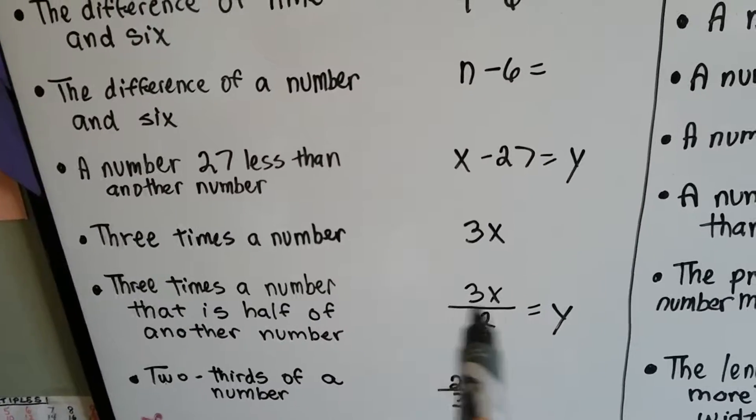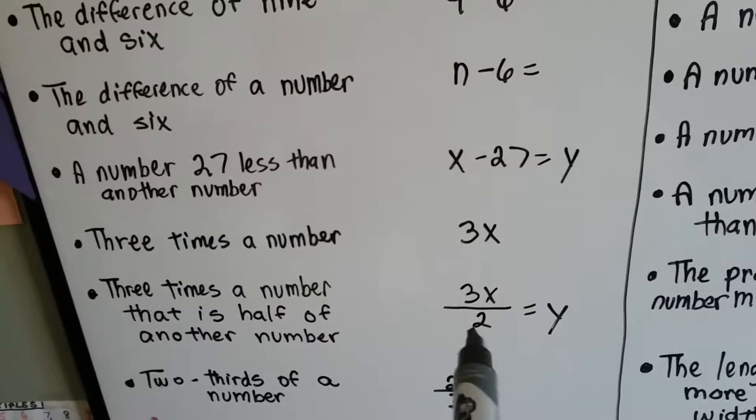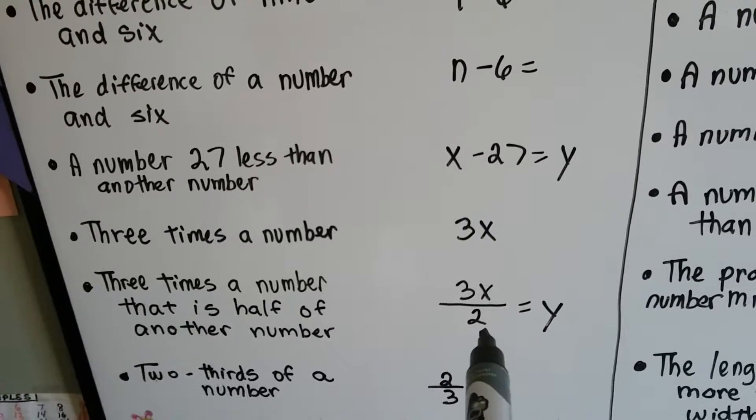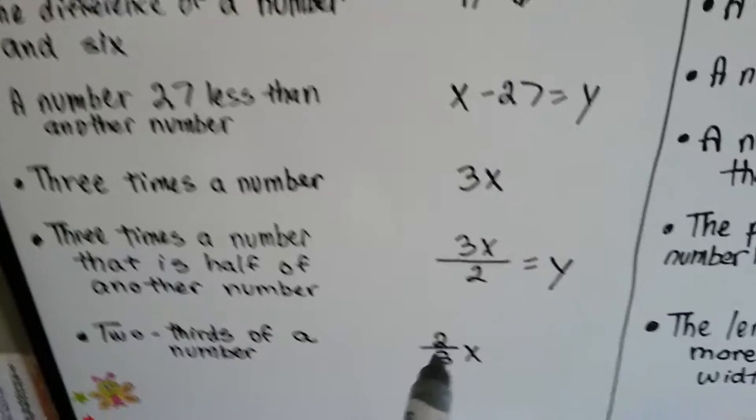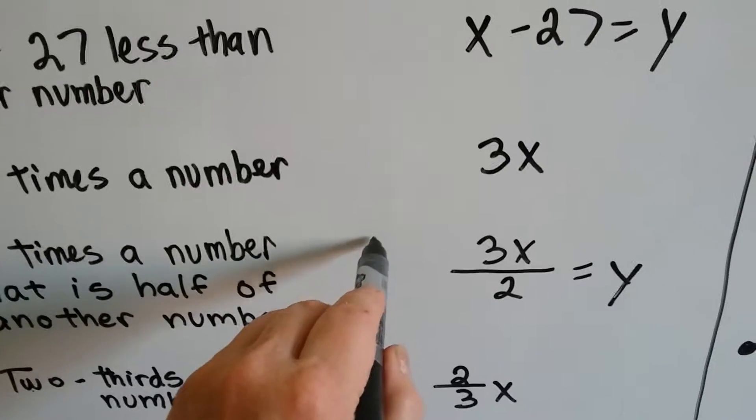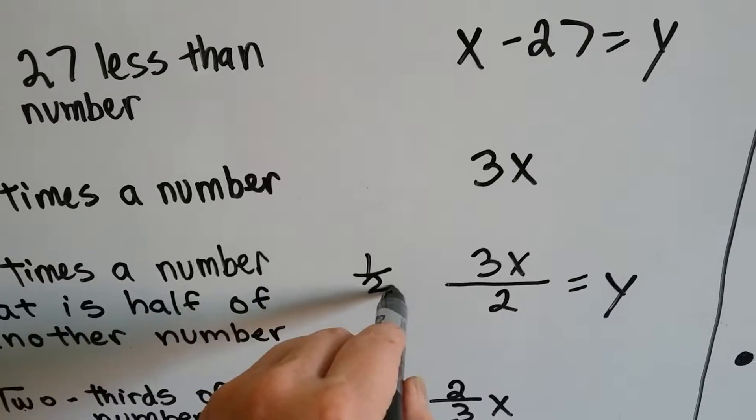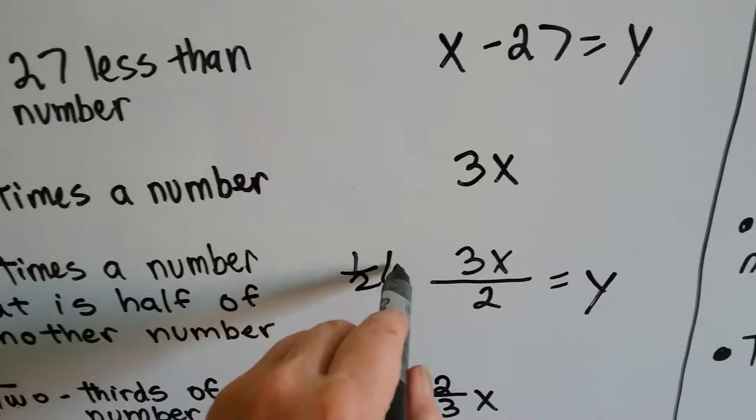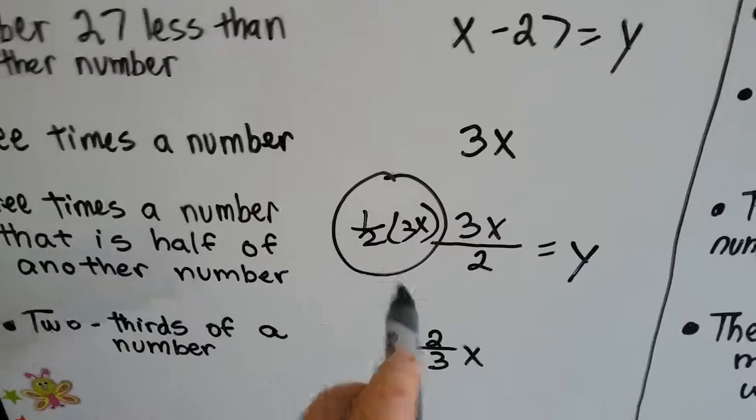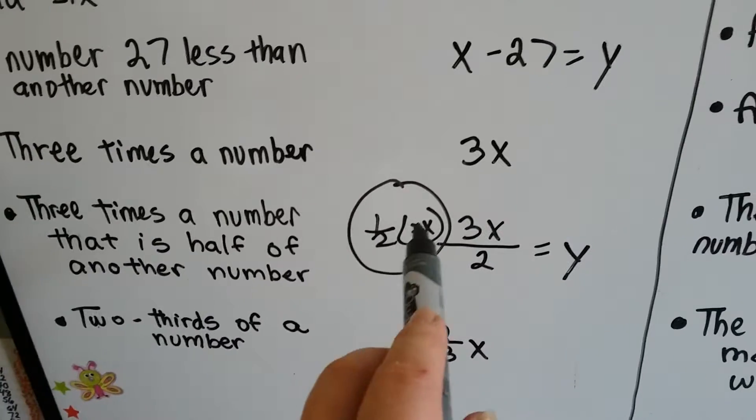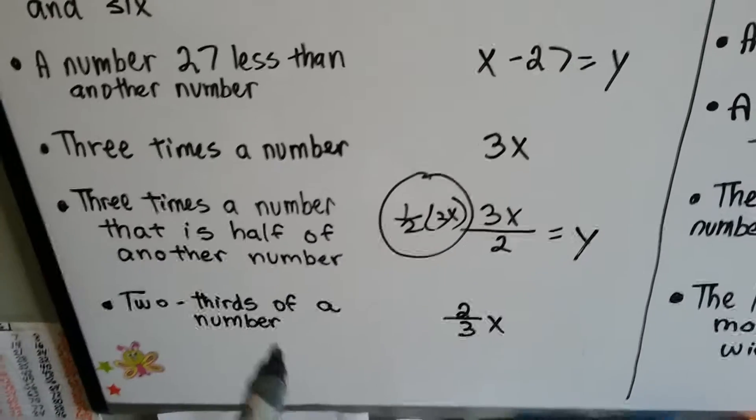But it's half of another number. We can put it as a fraction over 2 to show division. And the another number is a y. Now another way to have done this would be to multiply it by a half. We could do half times 3x, because that would have been the same thing as half of that number that is 3 times it.